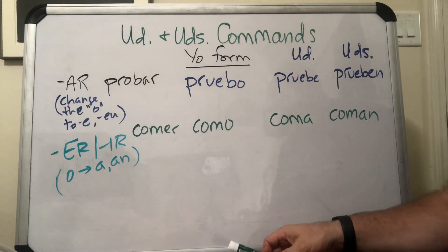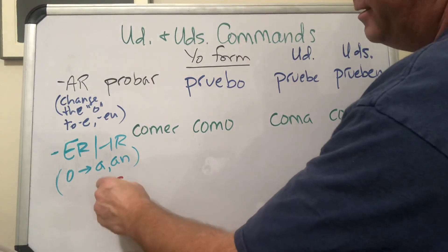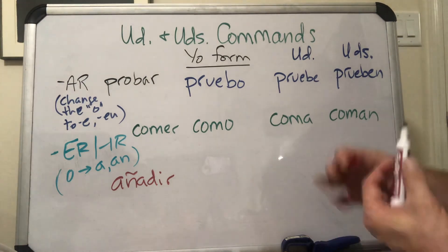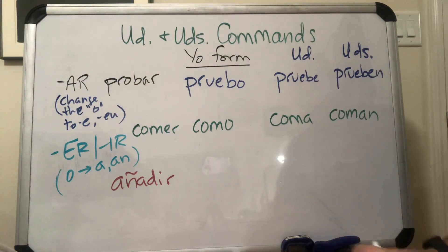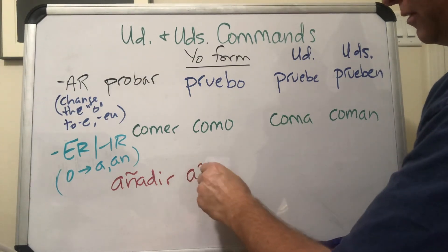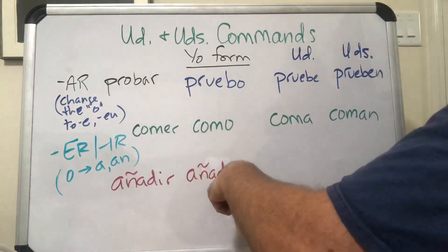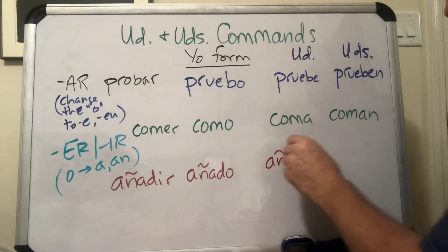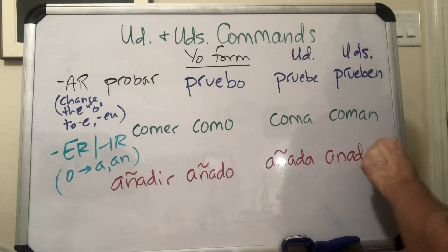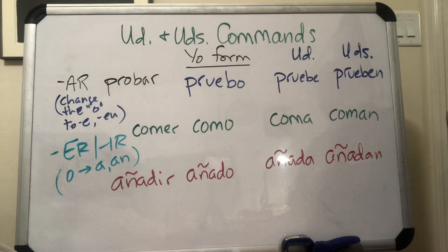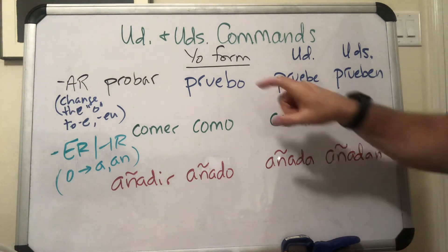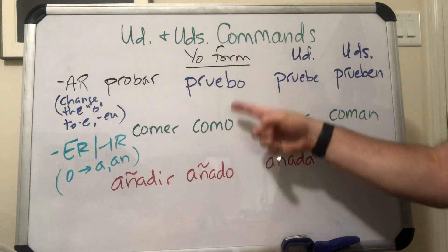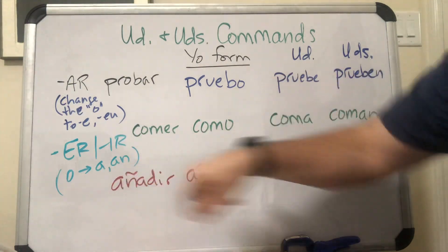Another verb on your vocab list is 'añadir,' which means to add. So if you're telling somebody in the directions to add two teaspoons of salt or a cup of flour, my yo form is 'añado,' and then I change the O to an A or an AN — so I have 'añada' and 'añadan' as my command forms. Again, wherever we get into trouble is with stem changes — whatever the verb does to change to the yo form, you work off of that by changing the O to either A or AN, or E or EN.